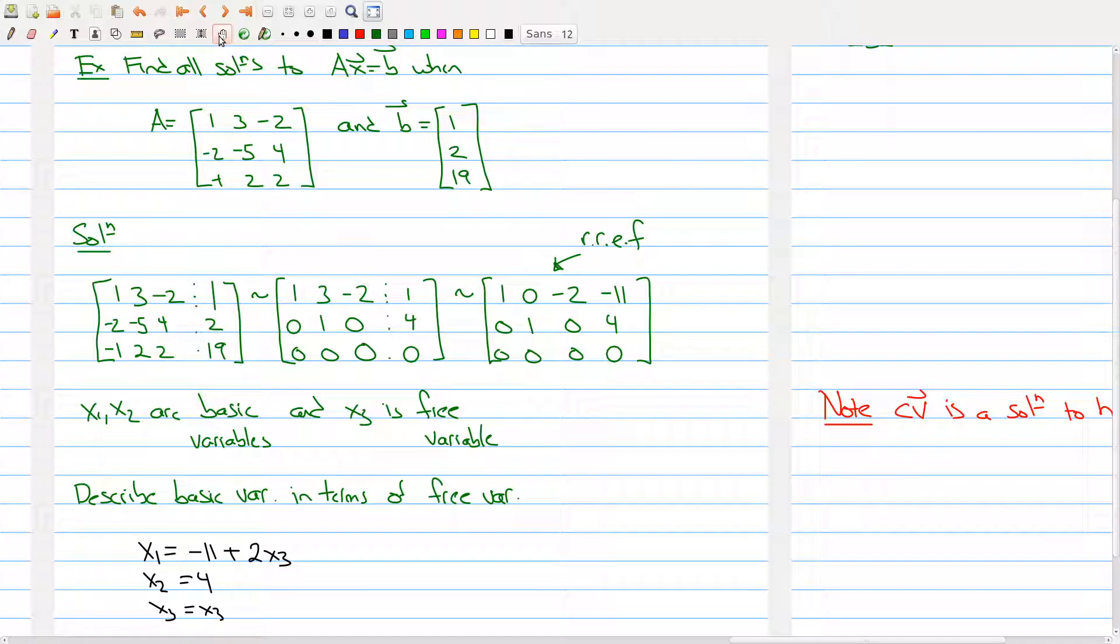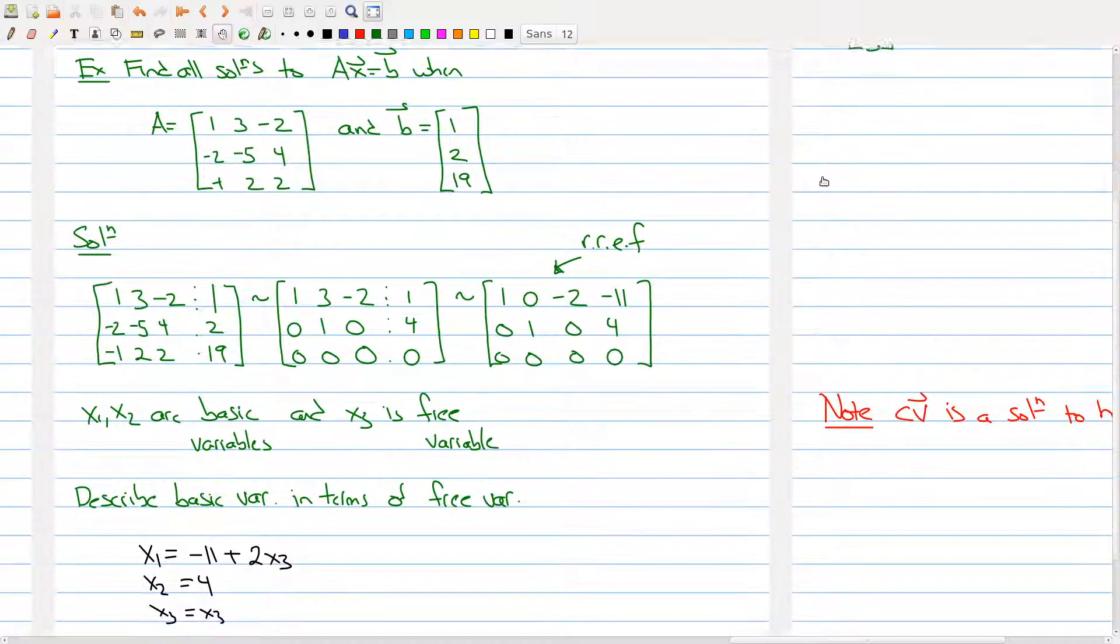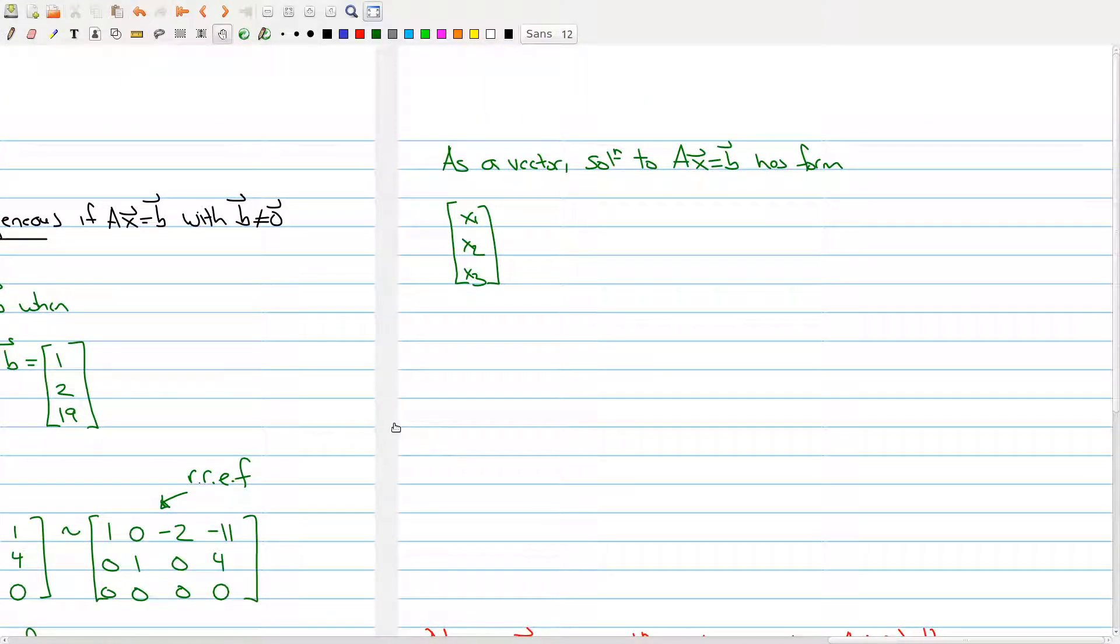This allows us to describe all solutions to our matrix equation. Let's do that over here. As a vector solution, any solution will have this form. We figured out x1 was -11 plus 2x3, x2 is always 4, and x3 is always x3.